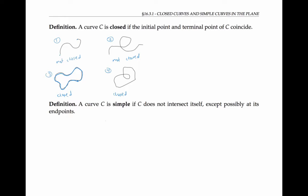So the first curve is simple. It doesn't intersect itself. But the second curve is not simple because it does intersect itself right here.